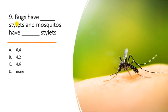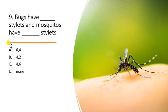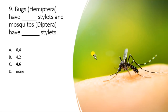The next question: bugs have how many stylets, and mosquitoes have how many stylets? The bug type has four stylets — modifications of two mandibles and two maxillae. Diptera (mosquitoes) have six stylets, where the labrum and labium are also modified into stylets.